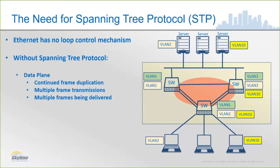Without Spanning Tree Protocol, what we would have in the data plane is continued frame duplication without any kind of a mechanism to control it. We would have multiple frame transmissions and multiple frames being delivered, which can be problematic for our endpoints.